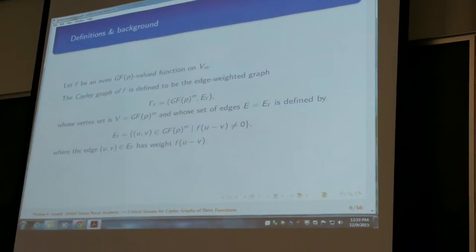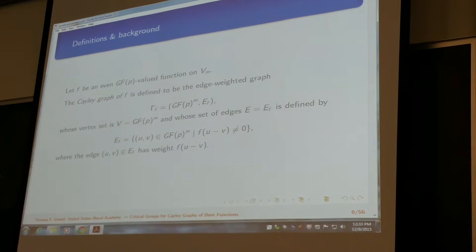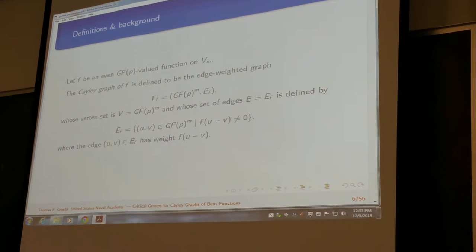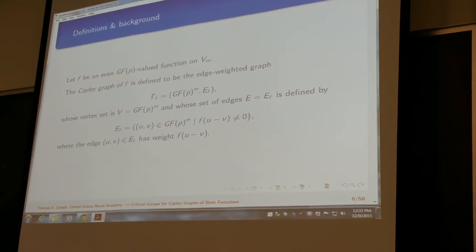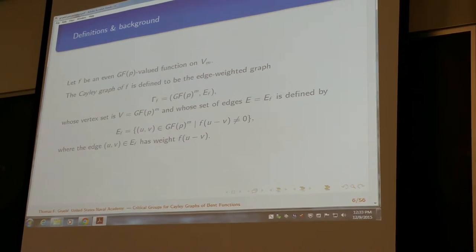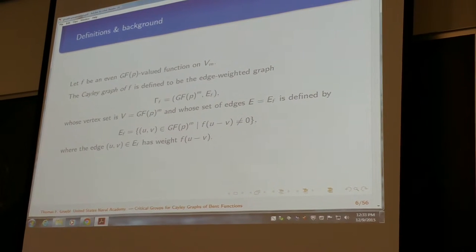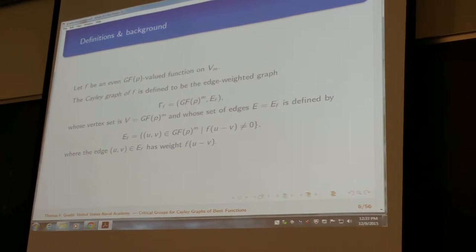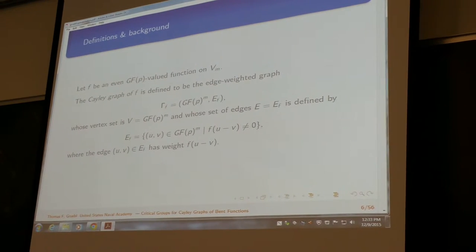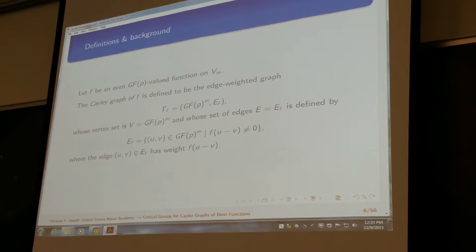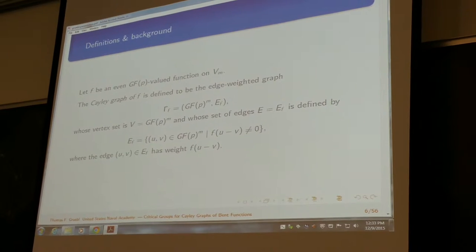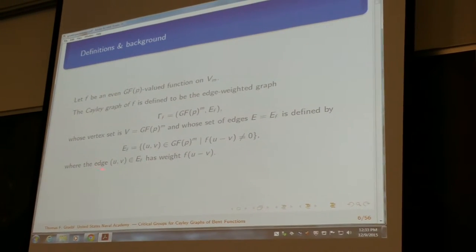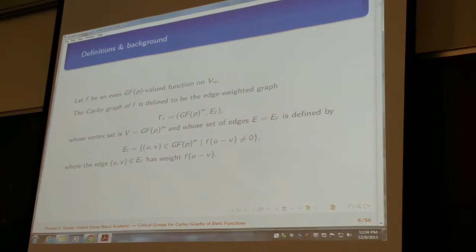Next, more definitions and background. The Cayley graph of a function is defined here. And then the big thing is that it's edge weighted. In the Boolean case, the Cayley graph doesn't need to be edge weighted, but for my research, this actually proves to be something that's really key that I'll go over later. And the weight for the edges is just edge uv has the weight f(u minus v).